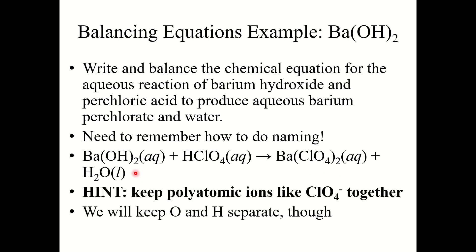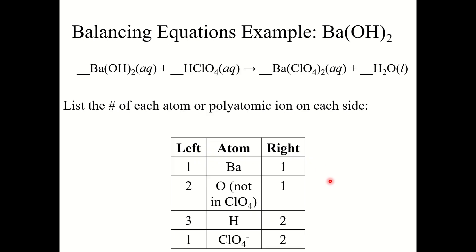Now we need to work on balancing this. I recommend keeping polyatomic ions together. Here, OH is not together on both sides, so we'll keep O and H separate. However, ClO4 is together on both sides, so keep ClO4 together as a unit — it makes things much easier. My table will have: barium, oxygen atoms not in ClO4, hydrogen atoms, and ClO4⁻ as a unit.